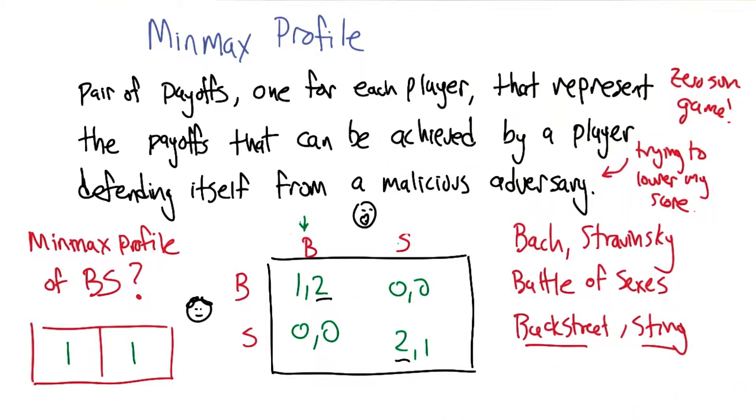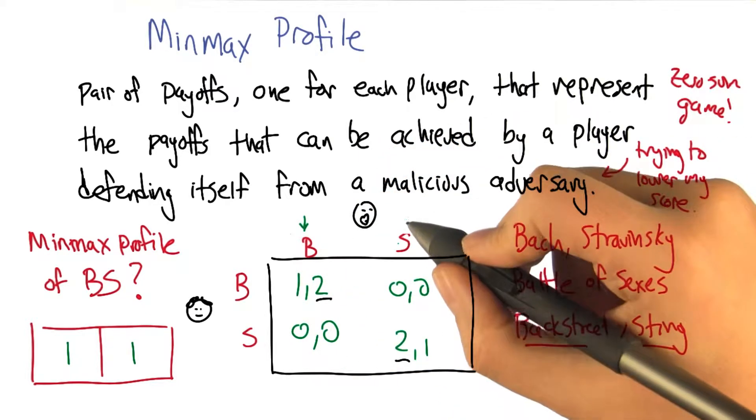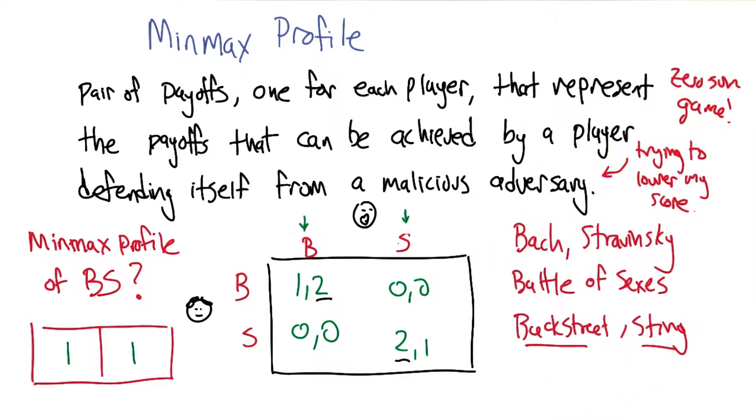If I took the S column, if Smooth took the S column, then Curly would choose the second row and would get 2. And 1 is lower than 2, so Smooth would choose the first column, and Curly would have to get the first row, and it would end up in a 1. Does that make sense?